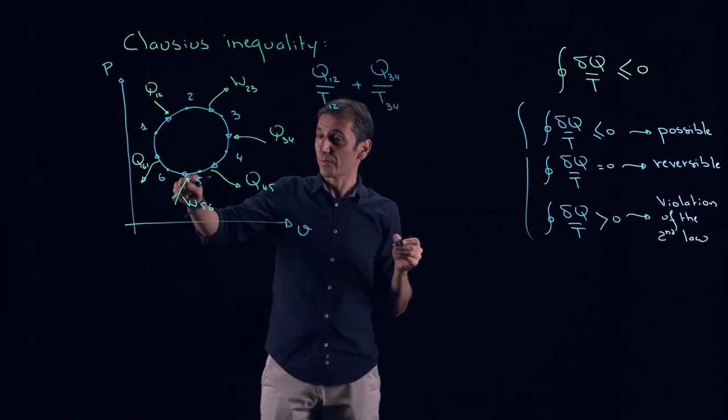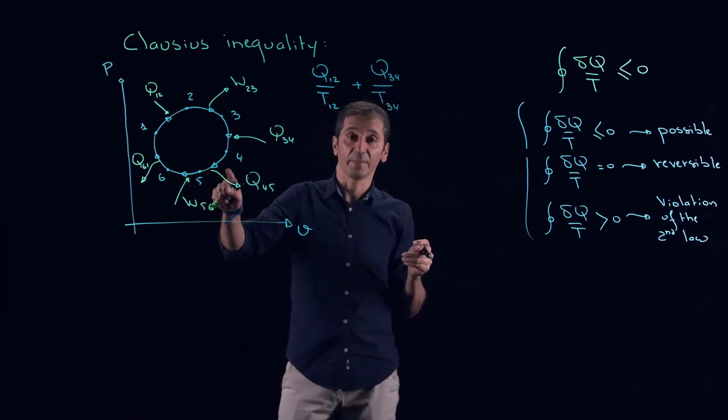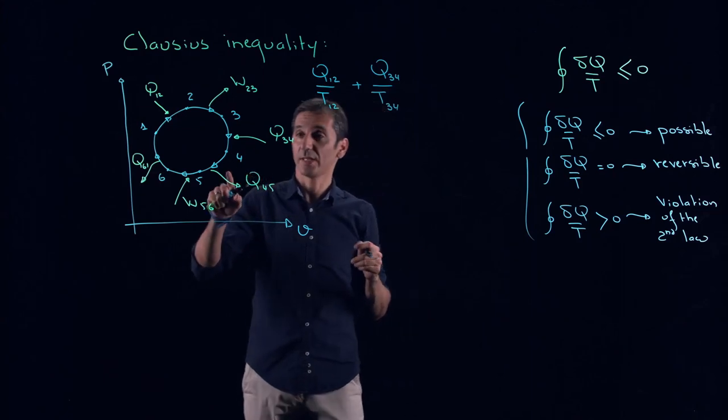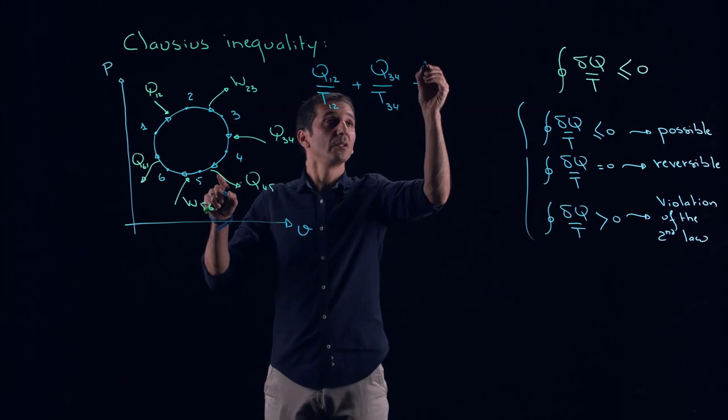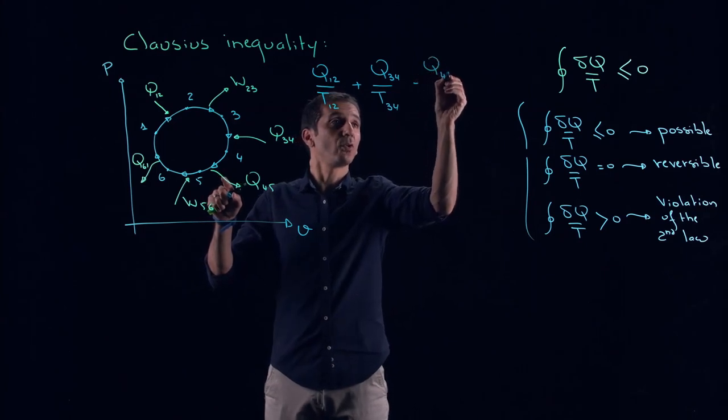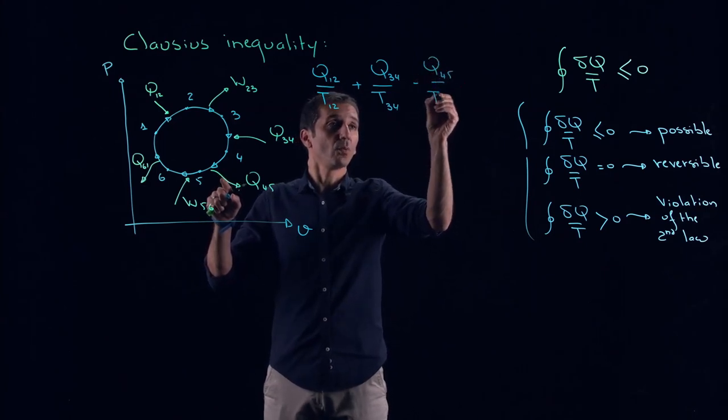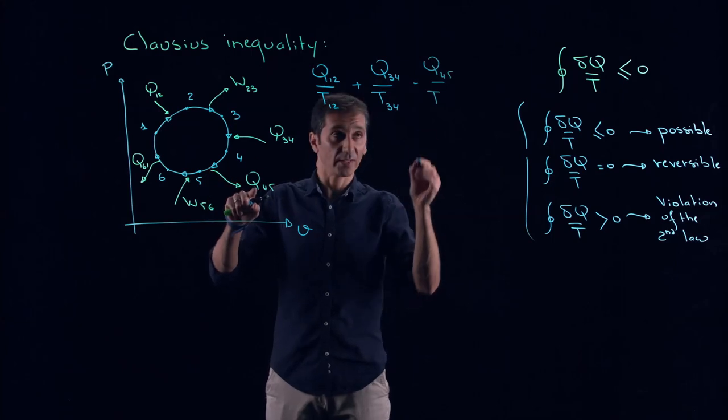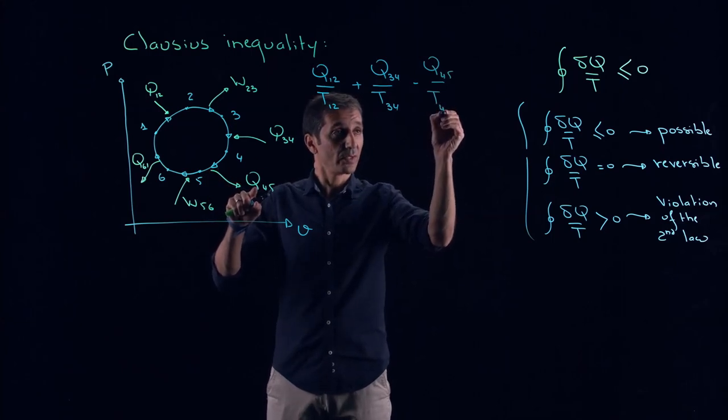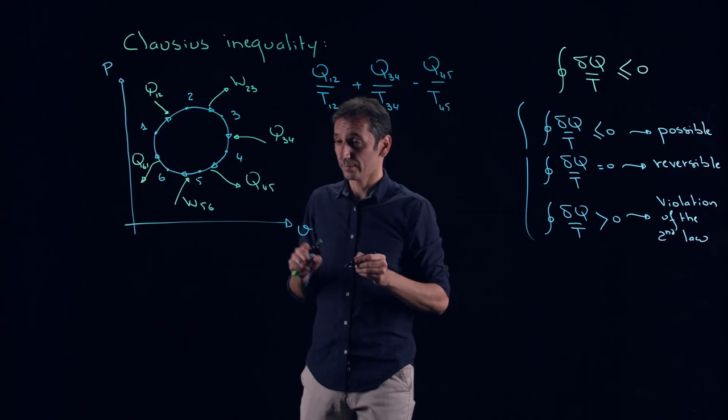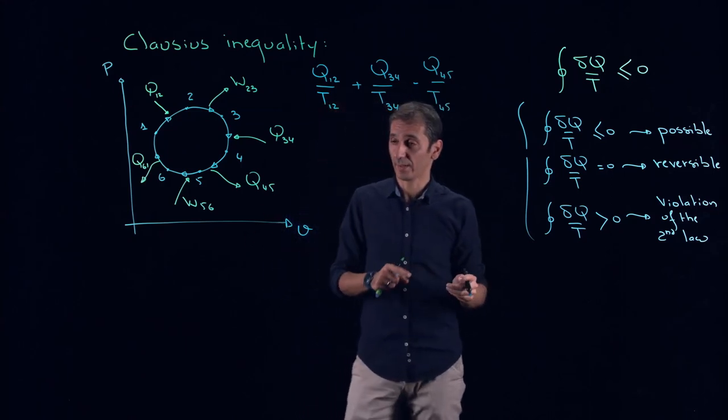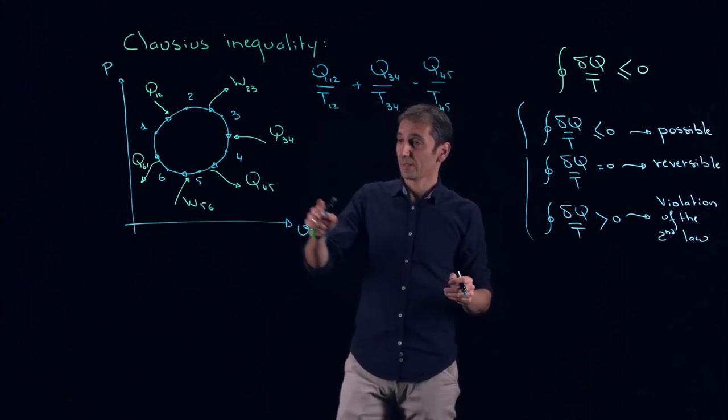From 4 to 5, we have heat, but this is rejected. You remember that when we reject heat, it's negative. So in this case, minus Q4,5 over, where is this heat rejected? In a reservoir at a temperature T4,5.